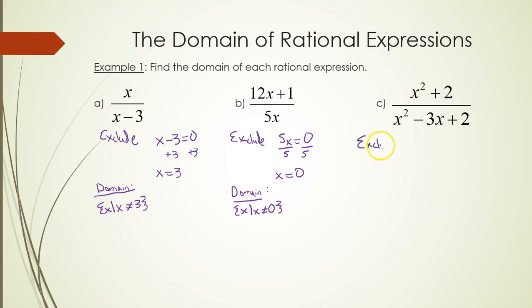And part c will have a little bit of work to do here because as you can see, when we set x squared minus 3x plus 2 equal to zero, it's a quadratic equation. So this one, we can factor it, so that's what we'll do.